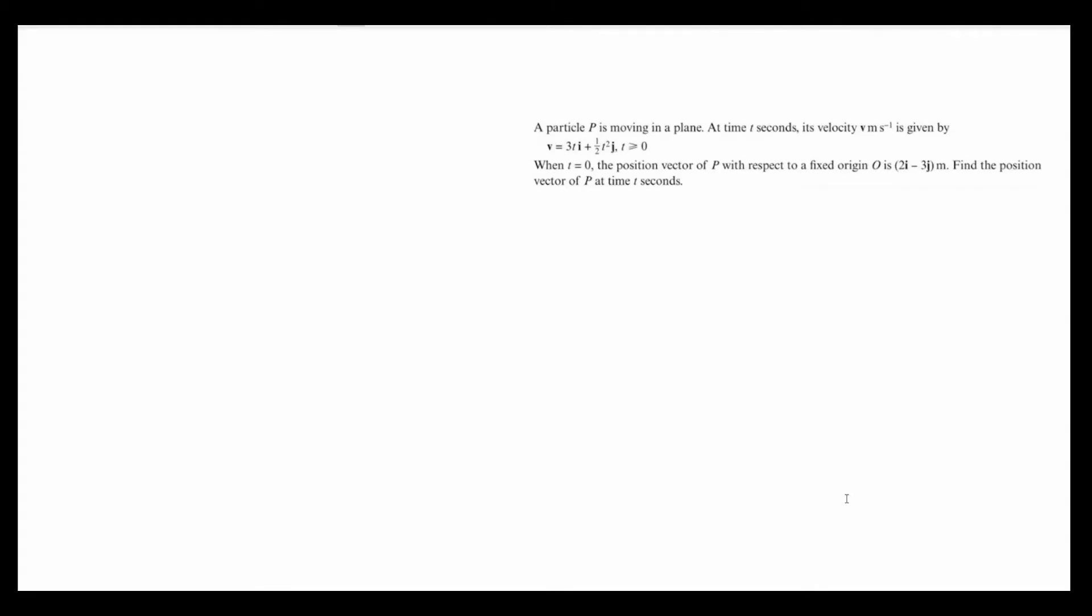Let's jump straight into an example. Here we've been told that a particle p is moving in a plane. At time t seconds its velocity is given by this function. When t equals 0, the position vector of p is 2i minus 3j meters.